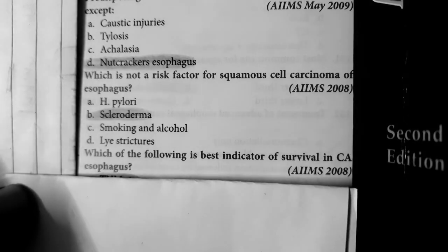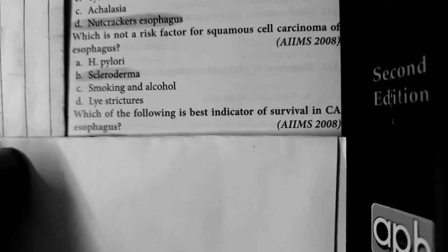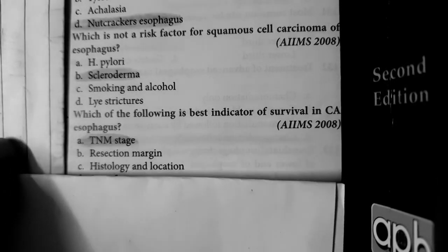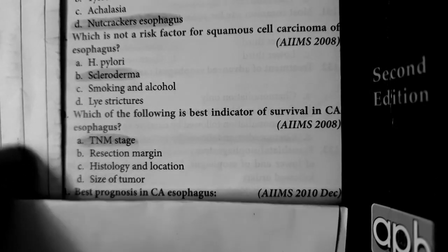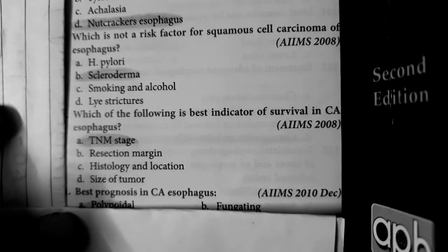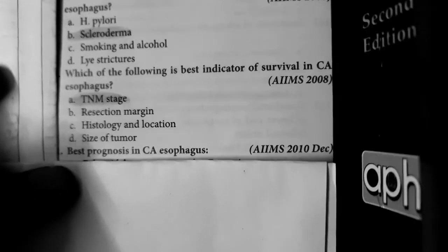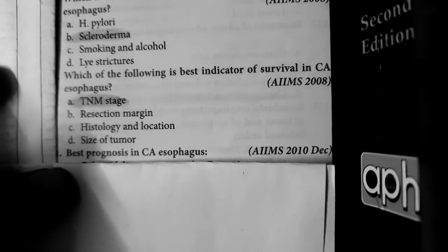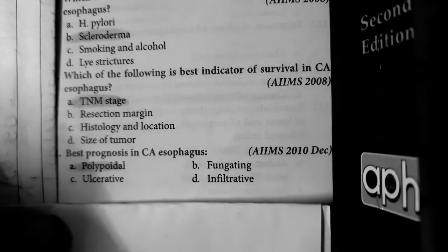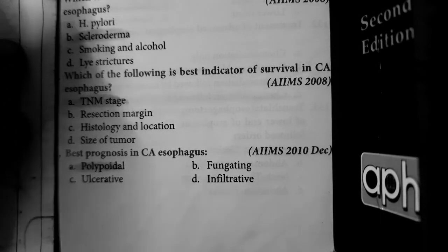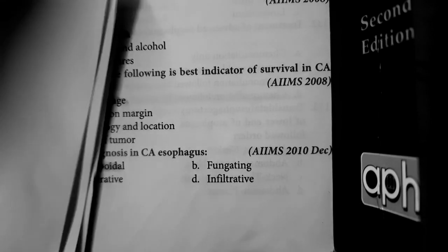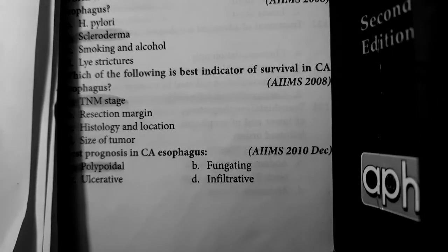Question number 10: Which of the following is the best indicator for survival in carcinoma esophagus? TNM staging is the best indicator for survival of carcinoma esophagus. Question number 11: Best prognosis of carcinoma esophagus — polypoidal shows the best prognosis. So this covers some MCQs on esophagus.